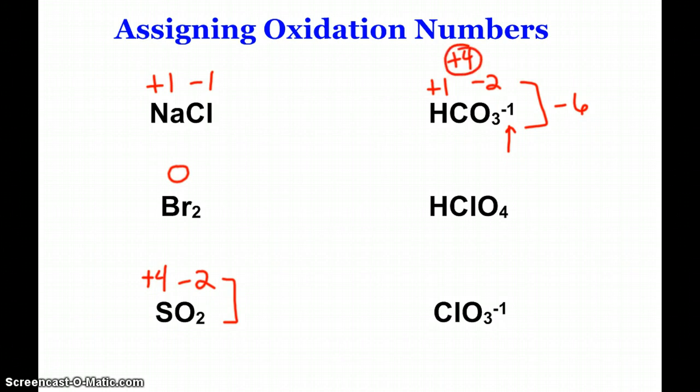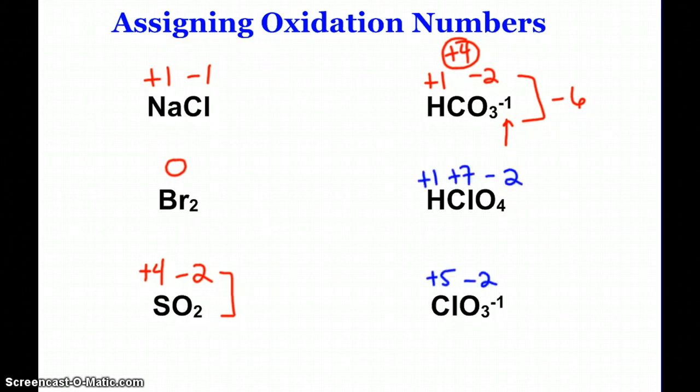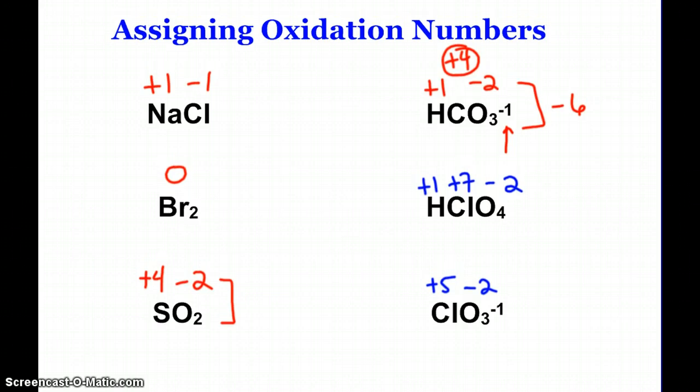Pause the video and see if you can assign the oxidation numbers for the next two species and check and see if you're right. So in perchloric acid, the oxidation numbers have to add up to zero. There's four oxygens, each of them minus two, so that's a negative eight total. Hydrogen is plus one, so the chlorine here must have a plus seven oxidation number. In the chlorate ion, it has to add up to a negative one charge. So three of the negative two oxygens makes negative six. And so the chlorine here must be plus five in order to get to the negative one charge. So hopefully that went well for you.